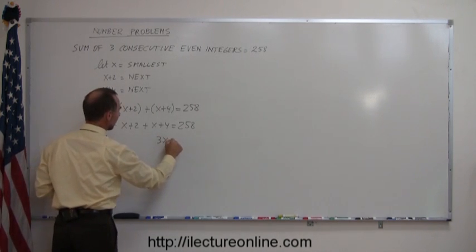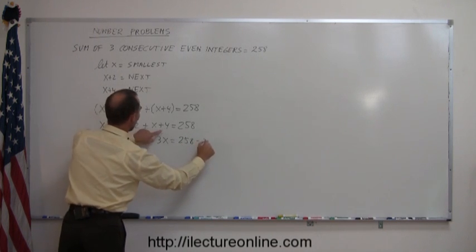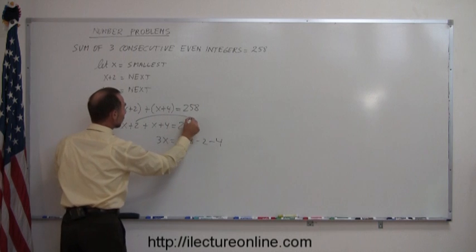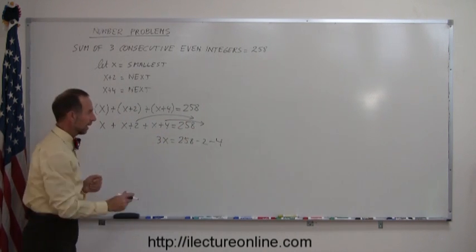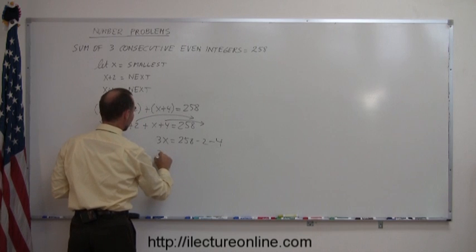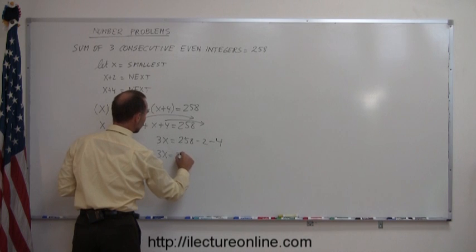I have 3x on the left side equals 258 minus 2 minus 4. Remember, whenever I move numbers to the other side of the equation, I change the sign. I combine the numbers on the right side so I get 3x is equal to 258 minus 2 minus 4, that would be 252.